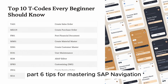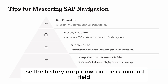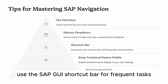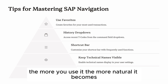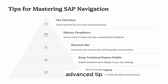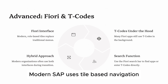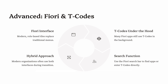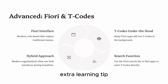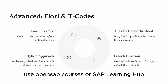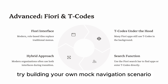Part 6: Tips for mastering SAP navigation. Create favorites by right-clicking on a T code and adding to favorites. Use the history drop-down in the command field and the SAP GUI shortcut bar for frequent tasks. Keep technical names visible and practice — the more you use it, the more natural it becomes. Also explore SAP Fiori apps for S/4 HANA; modern SAP uses tile-based navigation, but T codes still work underneath. Use OpenSAP courses or SAP Learning Hub to practice.